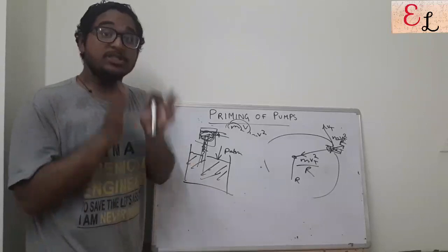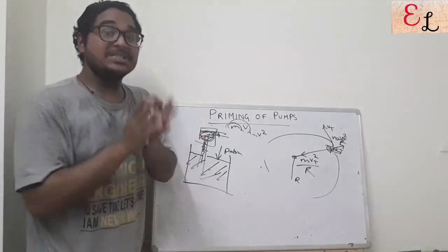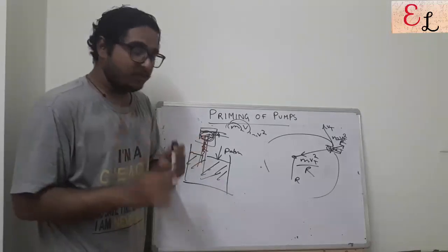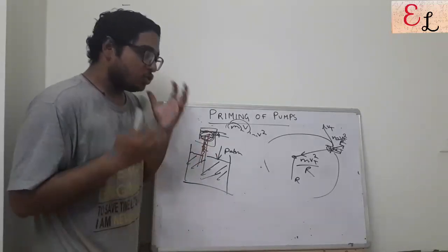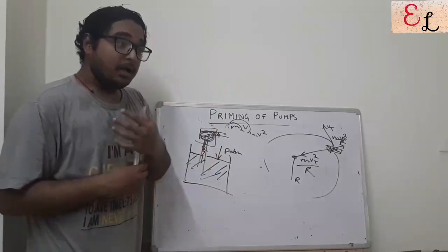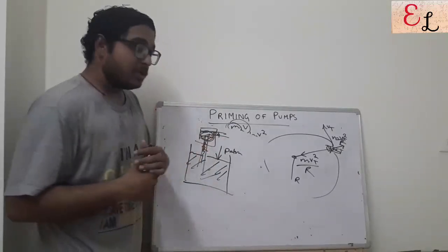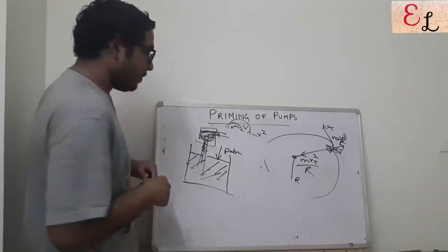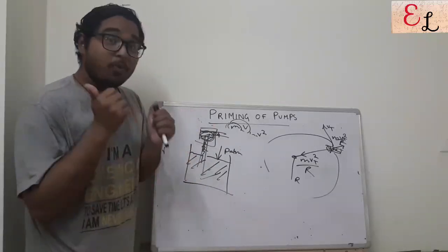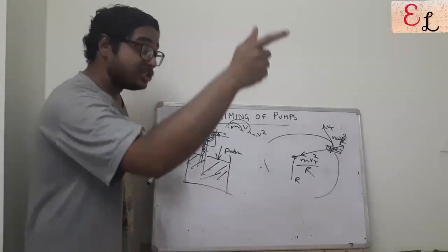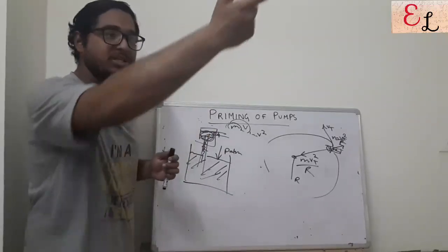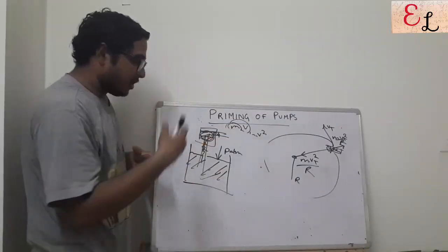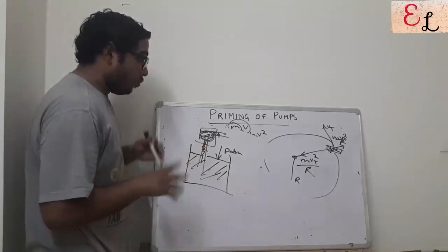Now apart from centrifugal pumps, positive displacement pumps are often called self-priming pumps. There is also a question very popularly asked in interviews: why do only centrifugal pumps require priming? It is not that positive displacement pumps require priming — but why do centrifugal pumps require it? Because a centrifugal pump works on the principle that the suction is analogous to the discharge momentum. So if the discharge is with air, it doesn't create enough suction for the liquid to be pulled in.